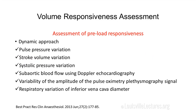The dynamic measurements used in the ICU include: pulse pressure variation, stroke volume variation, systolic pressure variation, measurement of stroke volume by echocardiogram, variability of the amplitude of pulse oximetry plethysmography signal, and respiratory variation of the inferior vena cava diameter.